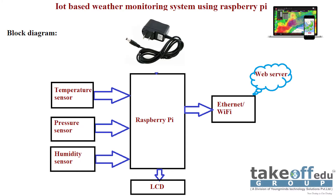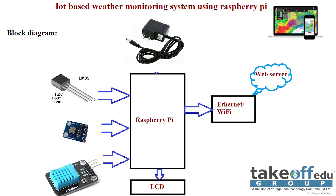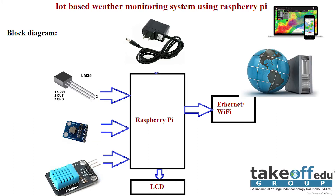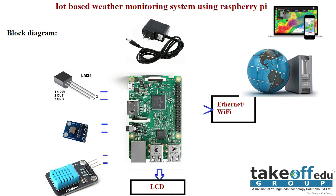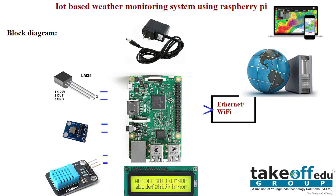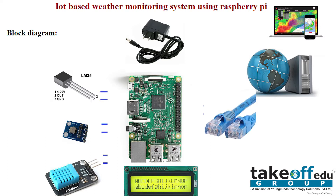Power supply is given here. Temperature sensor and humidity sensor are given as input to the Raspberry Pi. An LCD is used here to display the messages, and Ethernet or Wi-Fi is used to connect to the web server.